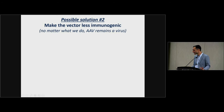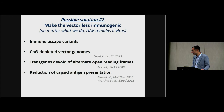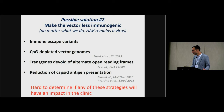Solution number two: make the vector less immunogenic. No matter what, AAV will always remain a virus. Approaches include immune escape variants, depleting CpGs from the vector genome — published by Jim Wilson in 2013 — eliminating alternate open reading frames in the transgene, and reducing capsid antigen presentation. John Finn showed this with bortezomib, a proteasome inhibitor, and Roland Herzog showed it using Arun Srivastava's tyrosine mutant, which prevents proteasomal degradation of the capsid. The challenge is the lack of an adequate animal model to validate these strategies preclinically.